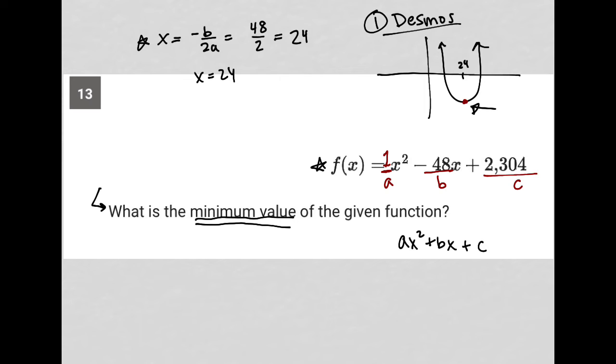To find the y value, I simply plug the x value of 24 into my original function. Let's do that. That would be y = 24² - 48(24) + 2,304.